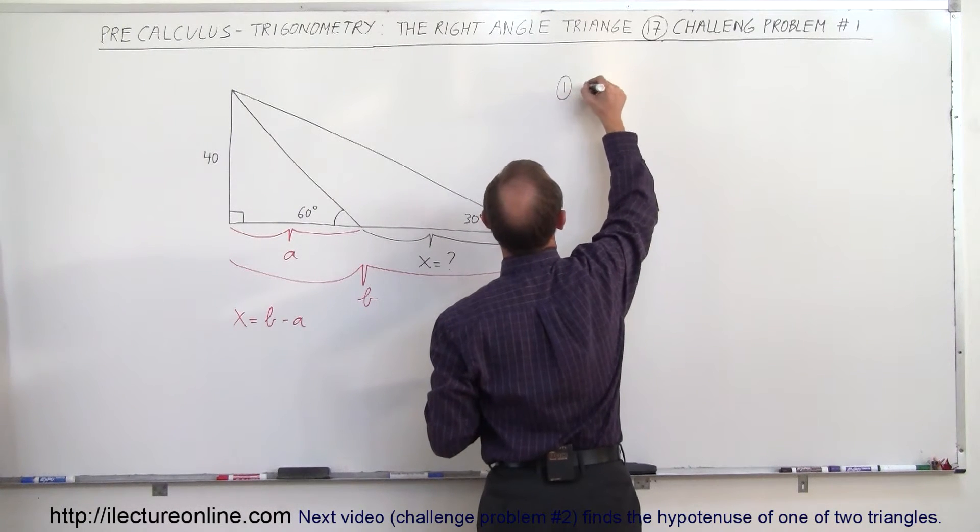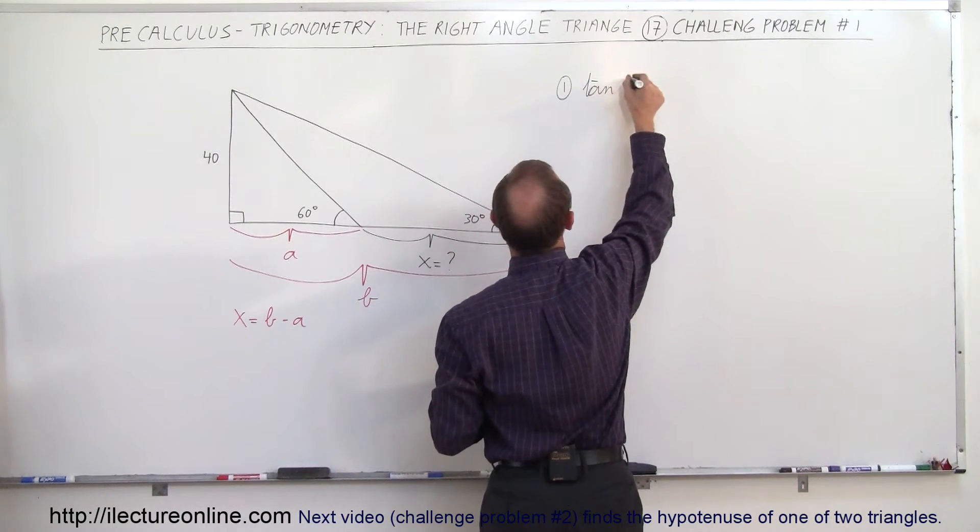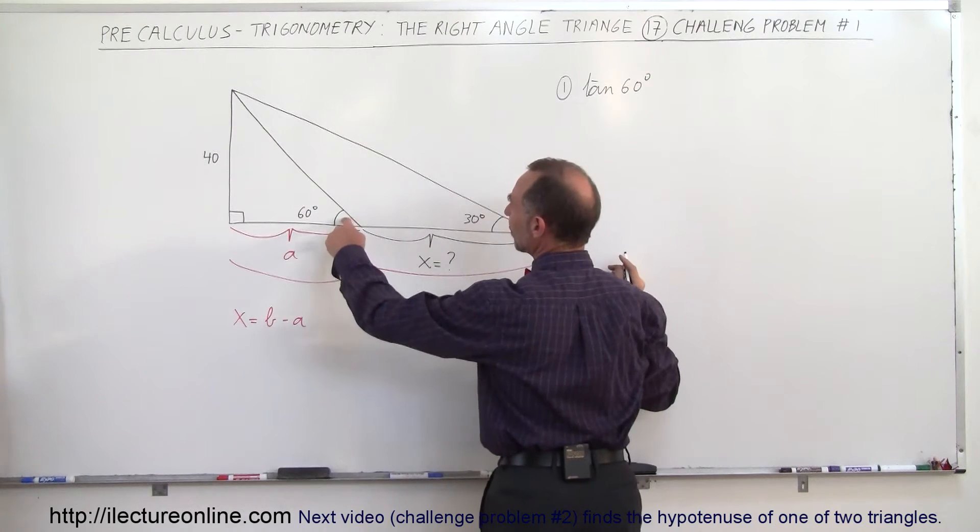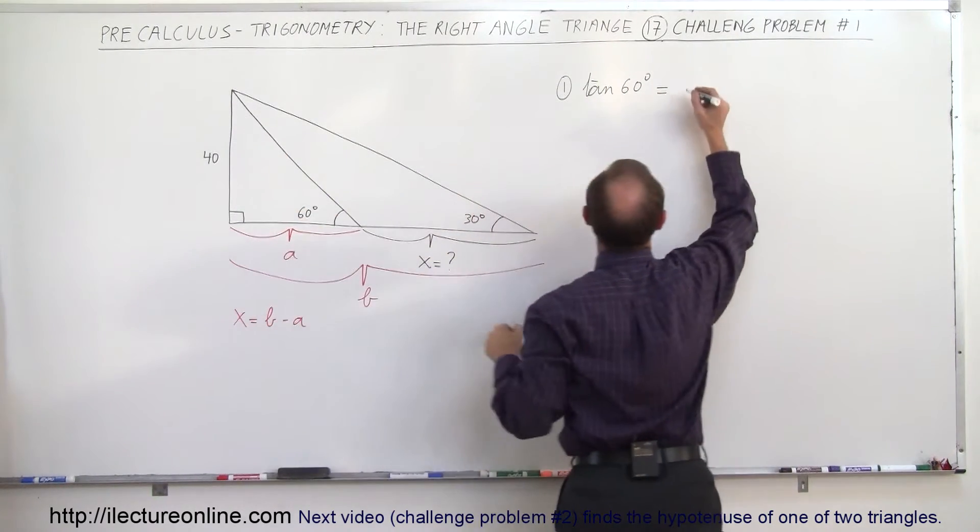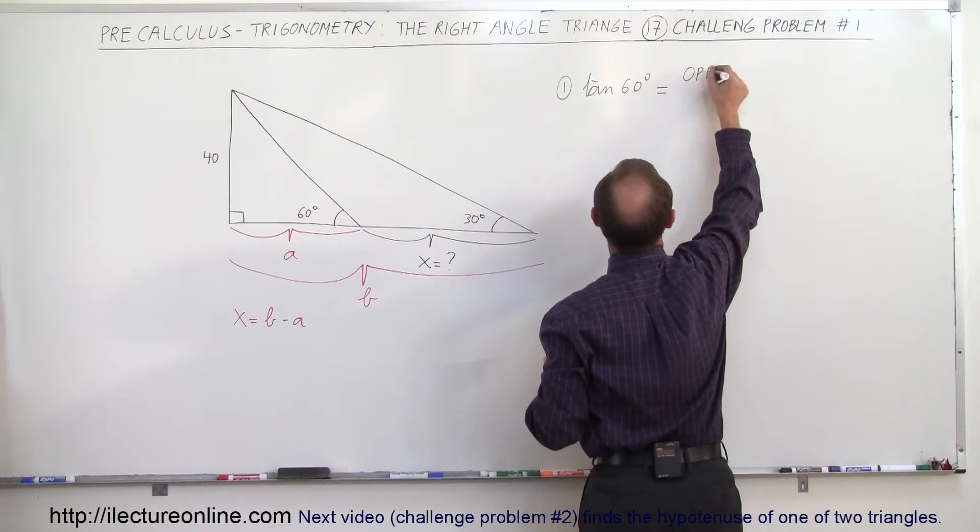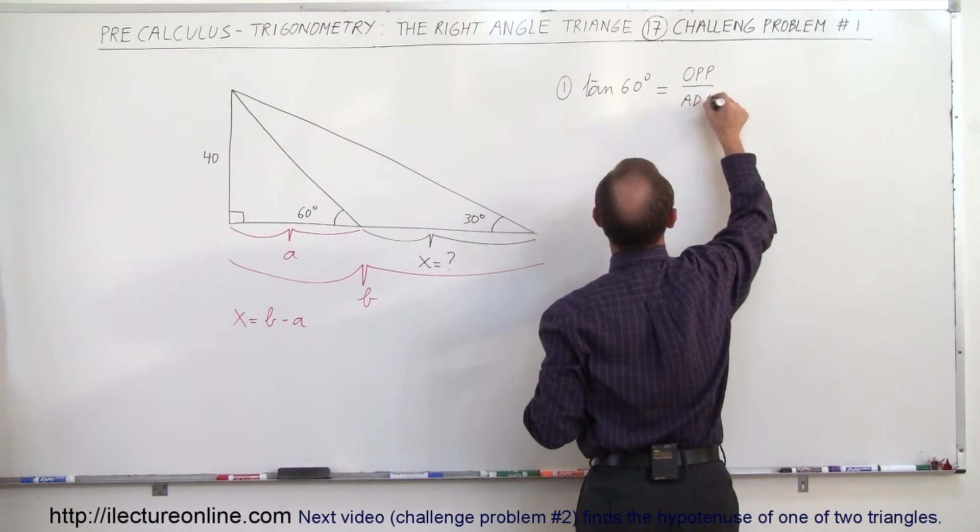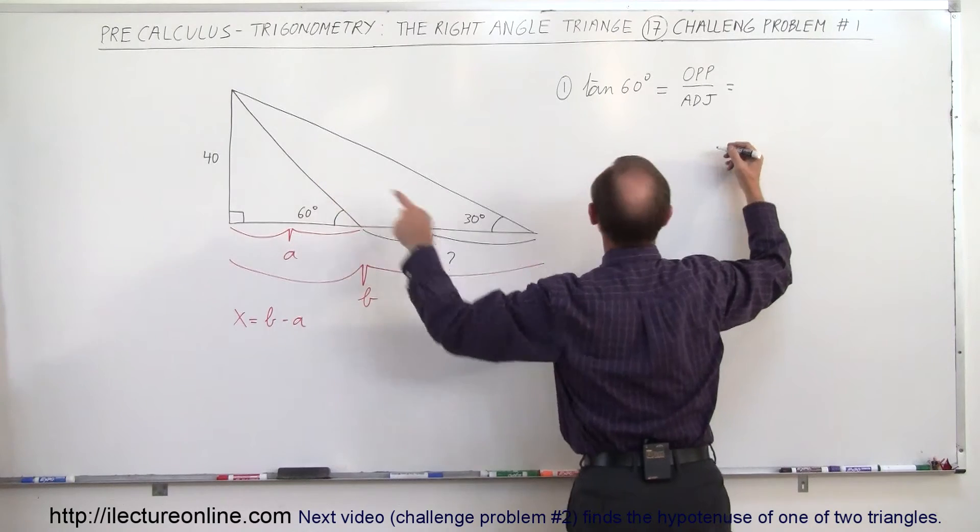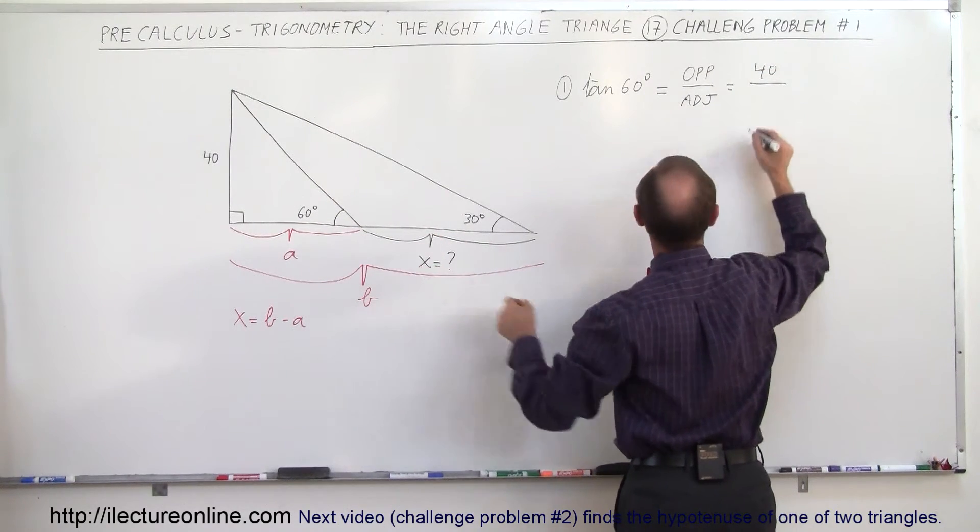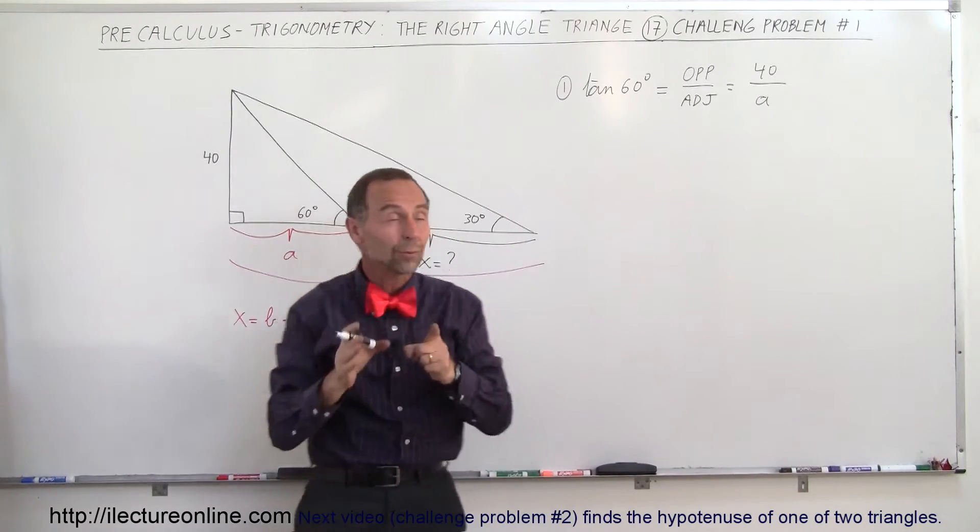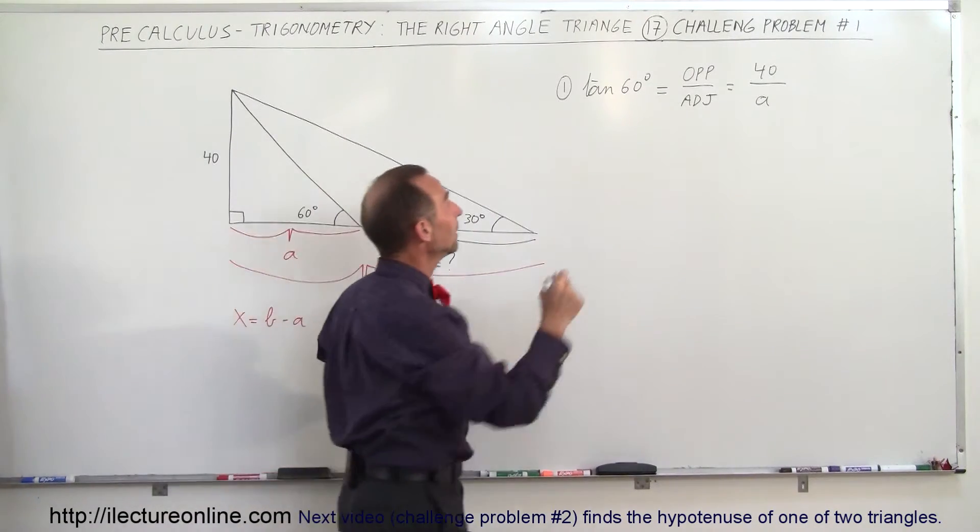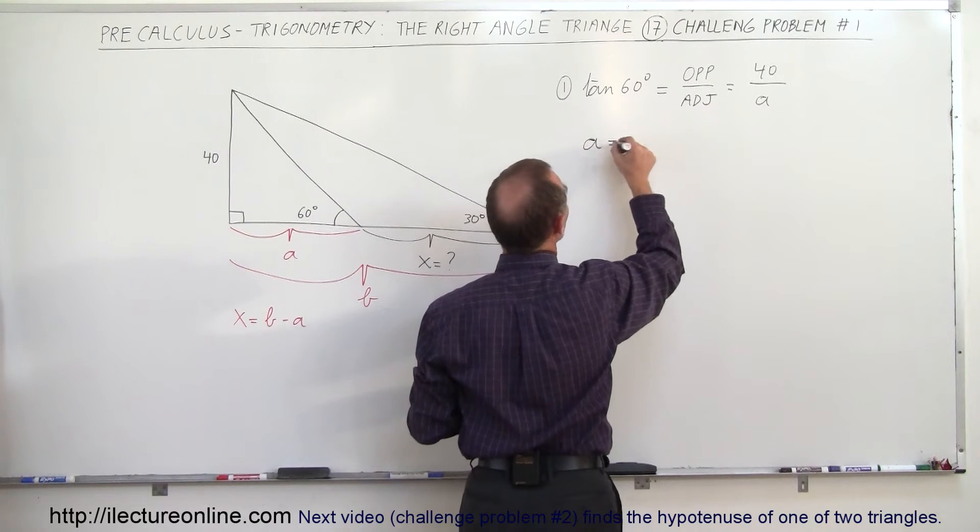We're going to say that the tangent of 60 degrees, the tangent of this angle, is equal by definition to the opposite side divided by the adjacent side. So that's the opposite side divided by the adjacent side. And the opposite side is 40, and the adjacent side is A, and A is what we're looking for. So what we want to do then is rearrange that equation to solve that for A.